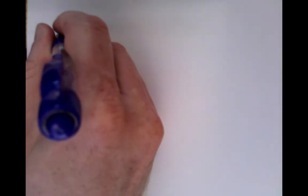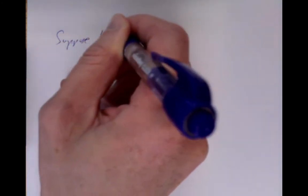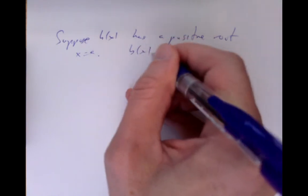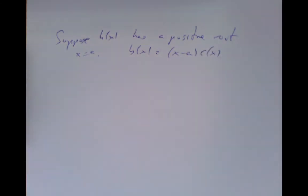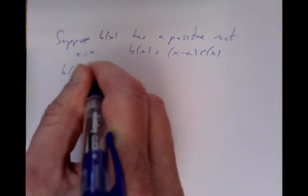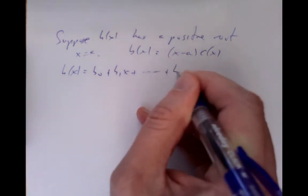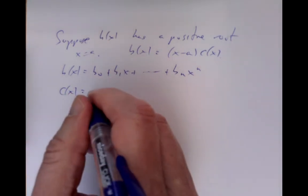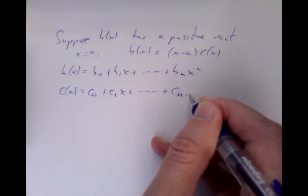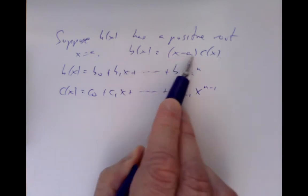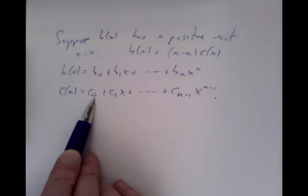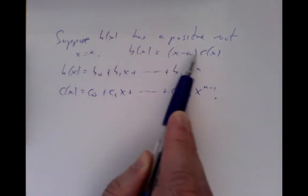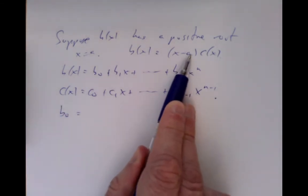Now suppose b of x has a positive root, say at x equals a. We can write b of x as x minus a times some c of x, where c of x has a smaller number of roots. By induction we can assume the result is already true for c of x. Let's see how this forces the relationships among the coefficients.